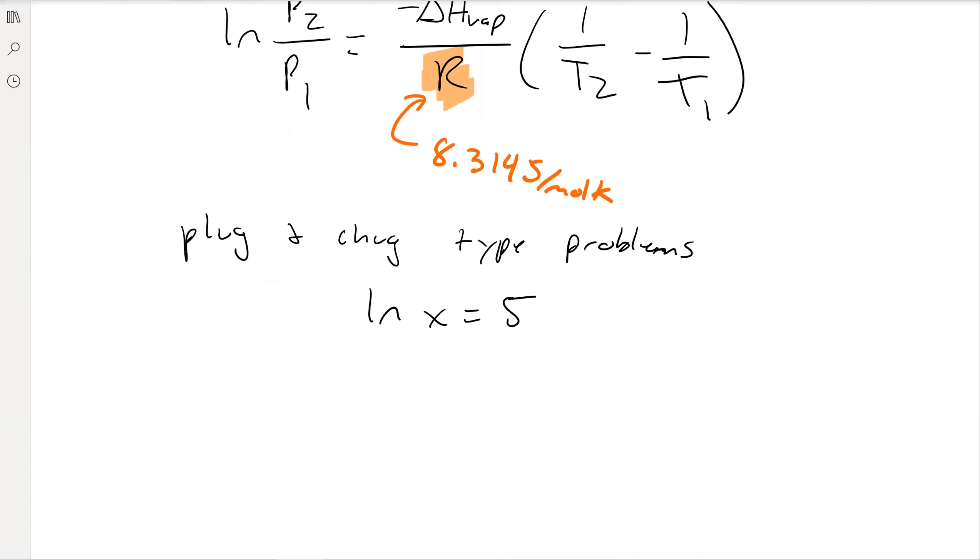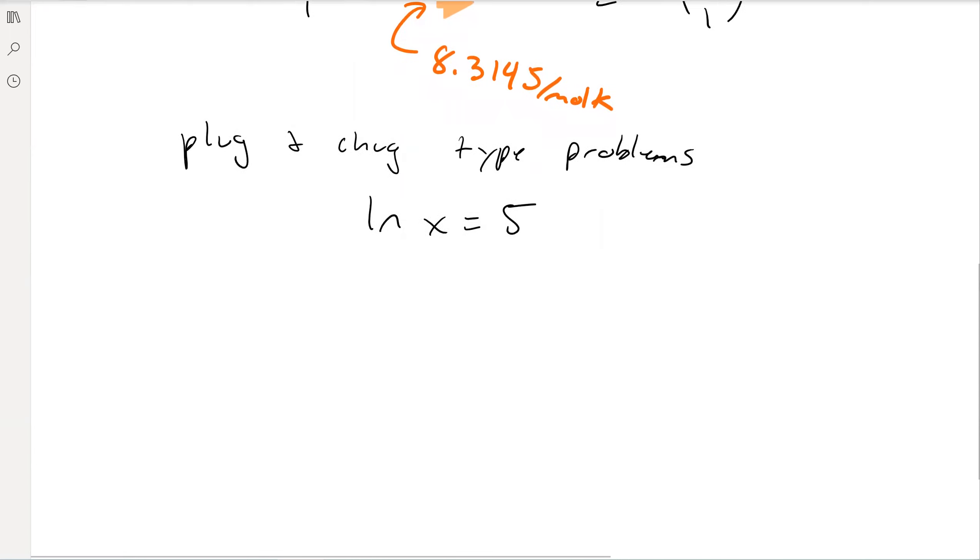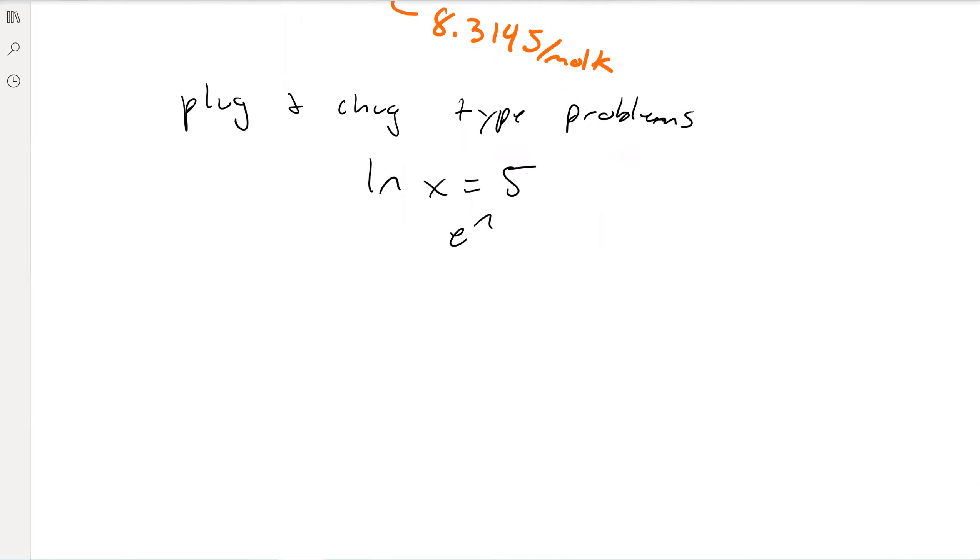So if you have the ln of x equals 5, how would you solve for x? You need to do the opposite of the natural log function - you need to take e and raise both sides to it. So then it becomes e to the ln of x equals e to the 5. And then this e and this ln cancel one another out. So then it's x equals e to the 5. You can find e to whatever number you want on your calculator. If you plug it in, you should get about 148.